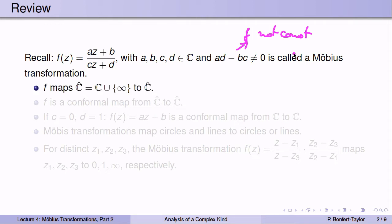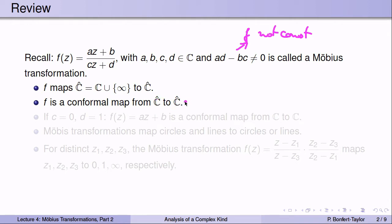Here are some facts we showed last class. A Möbius transformation maps the extended complex plane, which is C together with a point at infinity, to the extended complex plane. We were therefore allowed to plug in infinity for z, and we get f(∞) = a/c as long as c is non-zero, or f(∞) = ∞ if c = 0. We showed that f is a conformal map from C-hat to C-hat — it preserves angles, it's one-to-one, and it's onto.